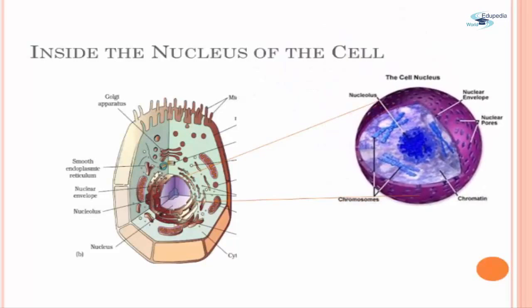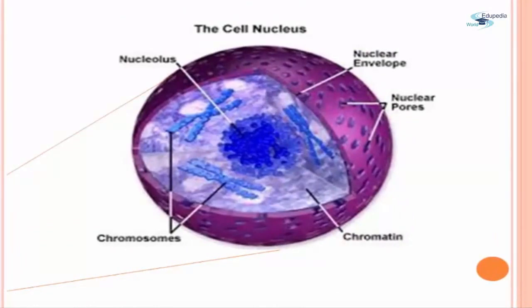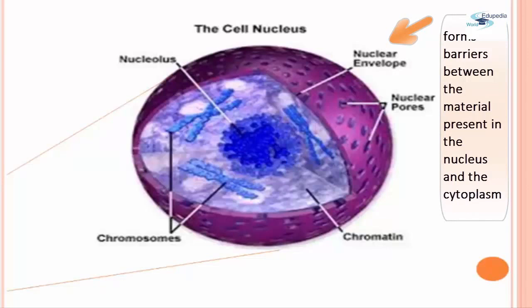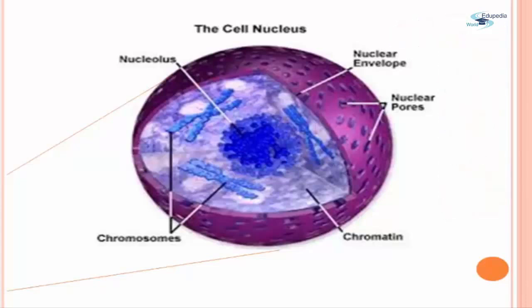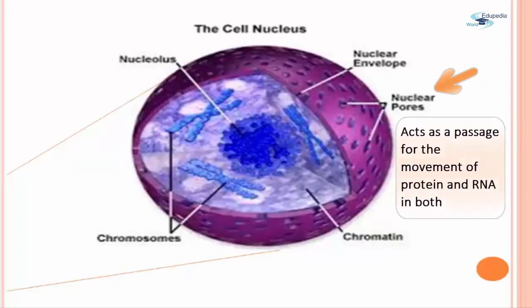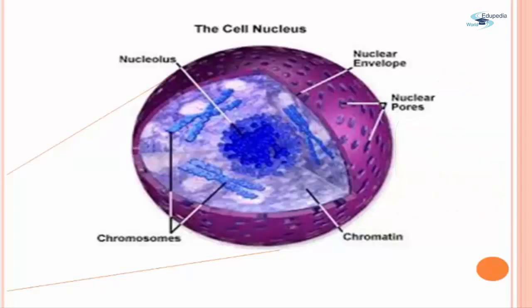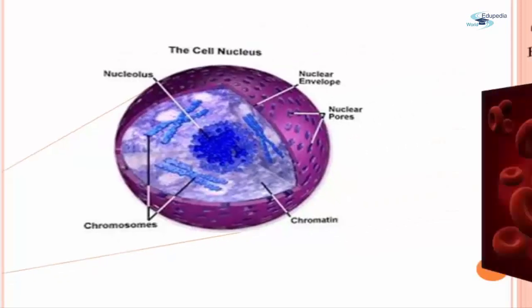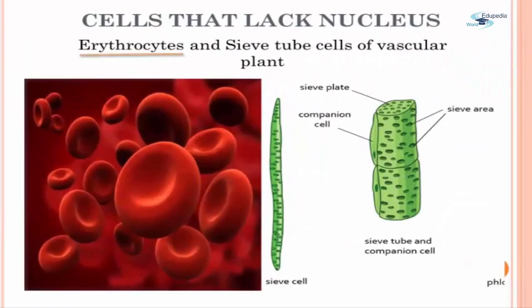Nucleus, as a cell organelle, was first described by Robert Brown. The nucleus is covered by a nuclear envelope comprising two parallel membranes with a perinuclear space. The nuclear envelope forms the barrier between the material present in the nucleus and that of the cytoplasm. The nuclear pores present on the envelope act as a passage for the movement of protein and RNA in both directions. Some mature cells lack a nucleus — for example, erythrocytes and sieve tube cells of vascular plants.